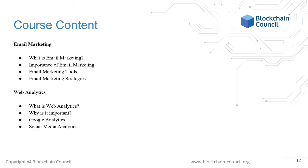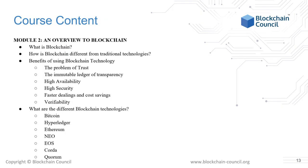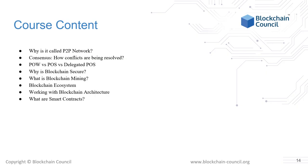Next, we will discuss what blockchain is, how blockchain is different from traditional technologies, benefits of using blockchain technology, and the different blockchain technologies. We will also see why it is called a P2P network, how conflicts are being resolved, POW vs. POS vs. Delegated POS, why blockchain is secure, the blockchain ecosystem, working with blockchain architecture.